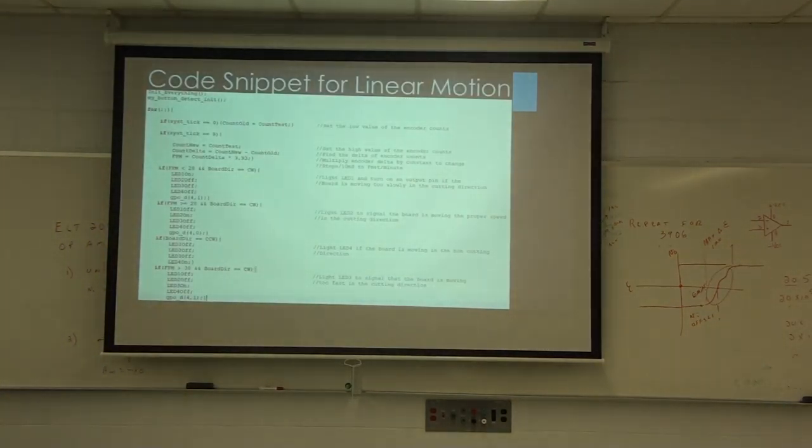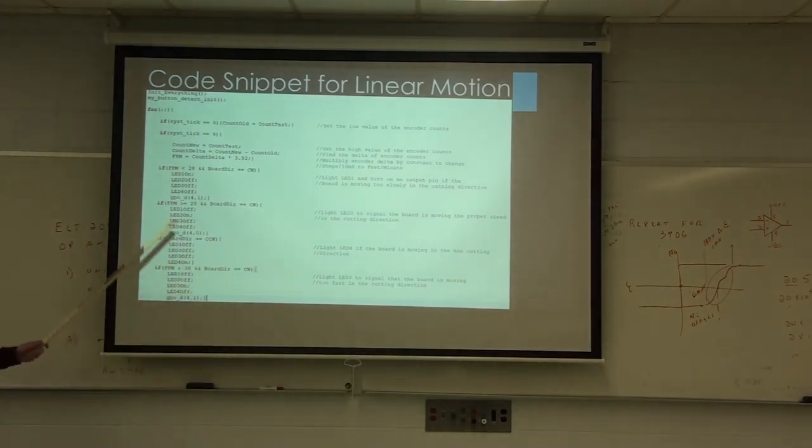This is a little bit of code that I wrote to make this all happen. It's just a little loop to take the number of counts and turn that into feet per minute, and then I have a couple of if statements depending on what that feet per minute value is. Do we need to stop the board? Are all systems go? Is it moving in the opposite direction? That kind of stuff.